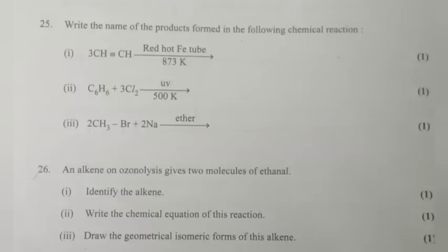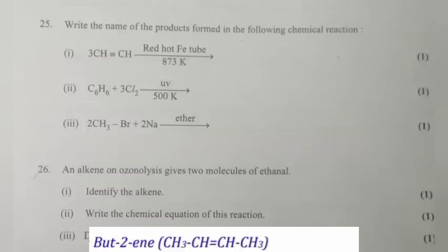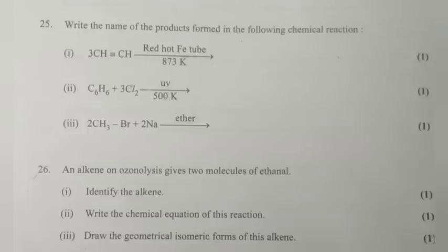Question 26: An alkene on ozonolysis gives 2 molecules of ethanal. 1. Identify the alkene. Answer: But-2-ene. 2. Write the chemical equation of this reaction. Answer: C4H8 → (ozonolysis) → products. 3. Draw the geometrical isomeric forms of this alkene.